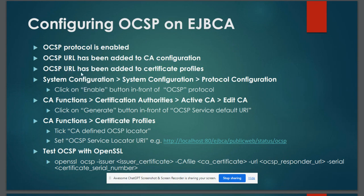The last thing we need to do is add the OCSP URL into our certificate profile. We go to CA Functions > Certificate Profiles. We have two options: either tick 'Use CA Defined OCSP Locators' — if we have already defined the OCSP server in our CA — or we can set the OCSP Service Locator URI manually, for example: http://localhost or the hostname, on port 80 or 8080, followed by /ejbca/publicweb/status/ocsp.